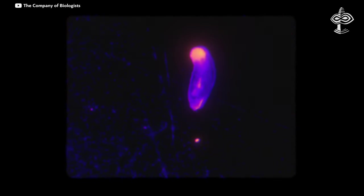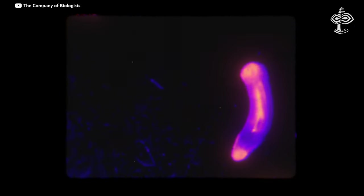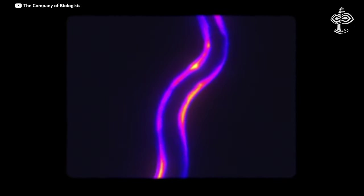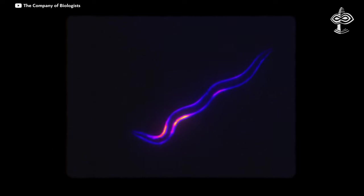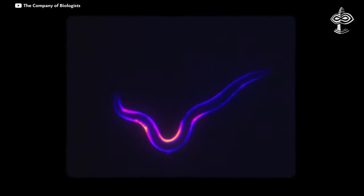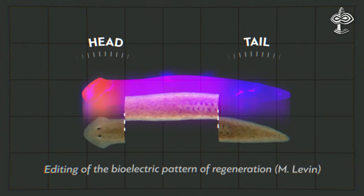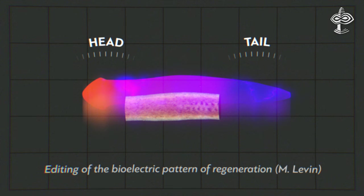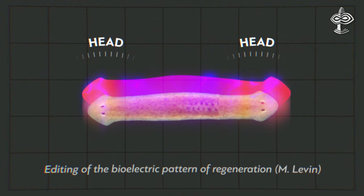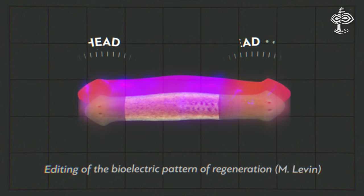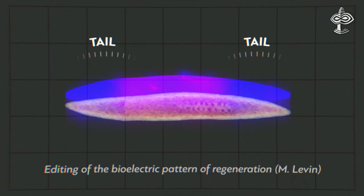For example, Levin's tail and head experiments showed that bioelectrical signals influenced the growth and identity of body parts. Bioelectric cues could not only determine where a new structure grew, but also what the new structure will be. For instance, altering ion channel or gap junction activity can trigger the bioelectric circuit that regulates head number and location in regenerating planaria, resulting in a species with two heads or two tails.